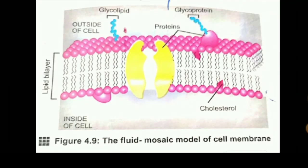The composition of a cell membrane is best explained by the fluid mosaic model. According to this model, there is a lipid bilayer — meaning two layers of lipid — in which protein molecules are embedded. Some carbohydrates join with proteins to form glycoproteins, and some carbohydrates join with lipids to form glycolipids. In eukaryotic cells, cholesterol is also present in the lipid bilayer.